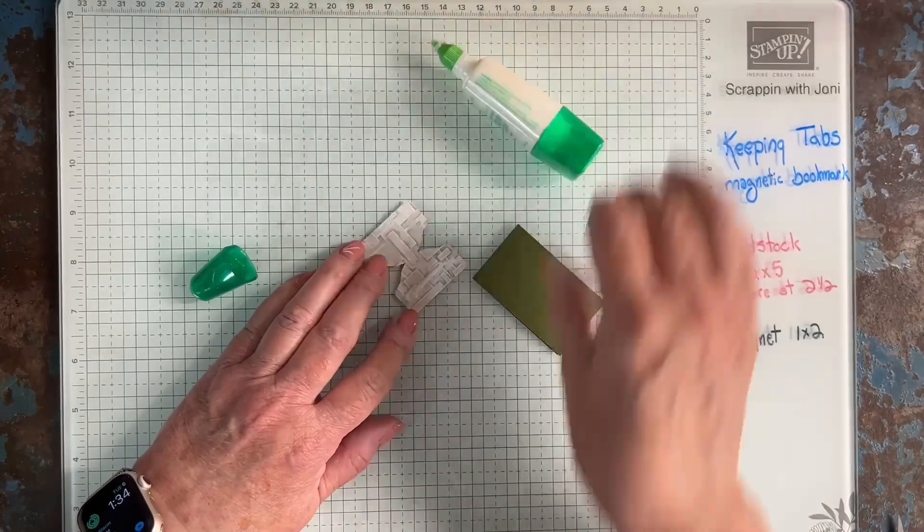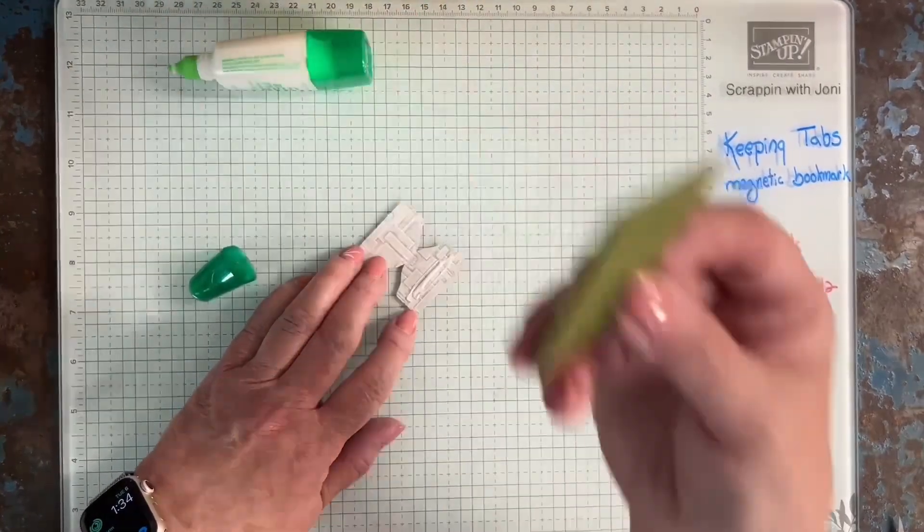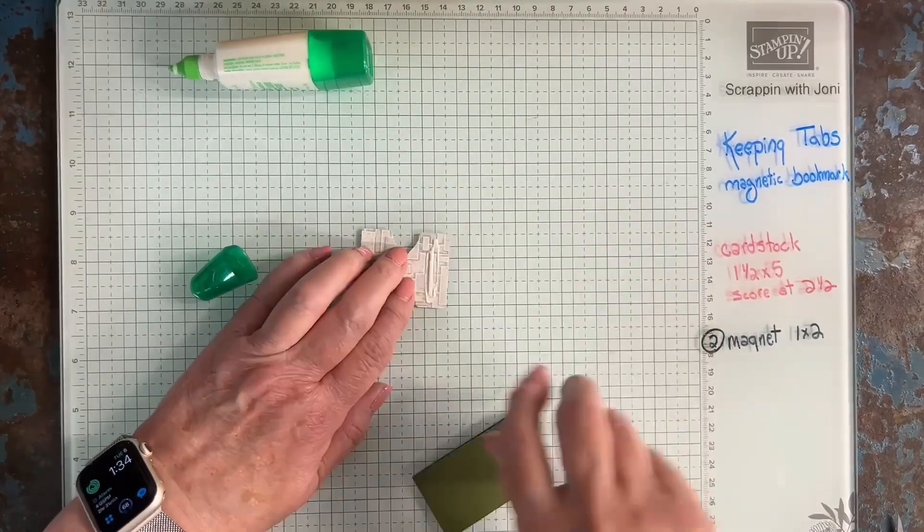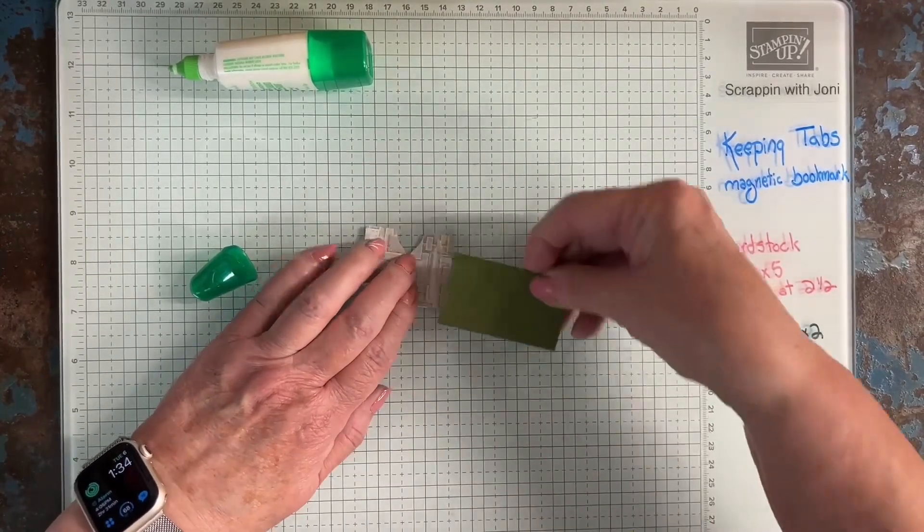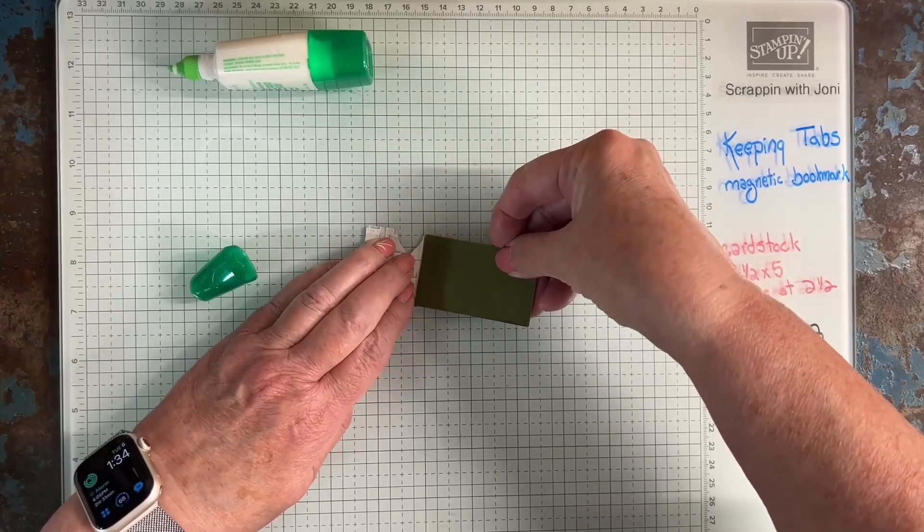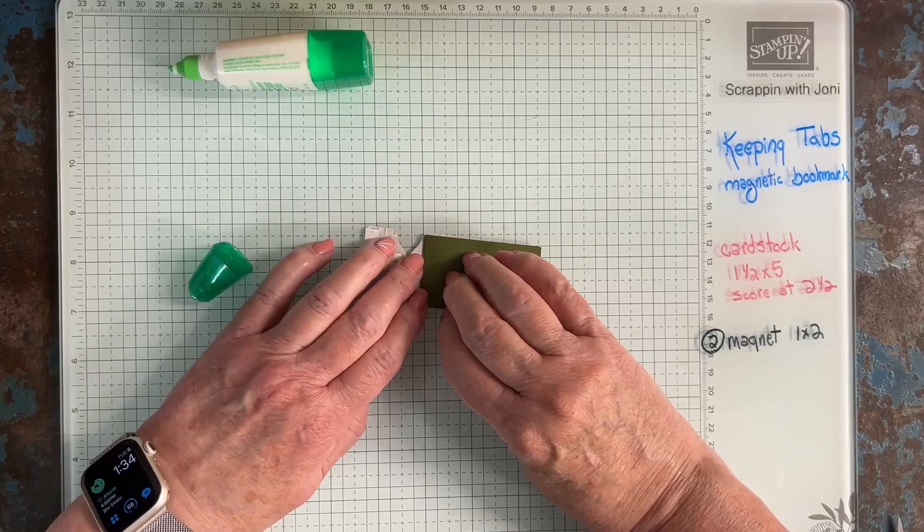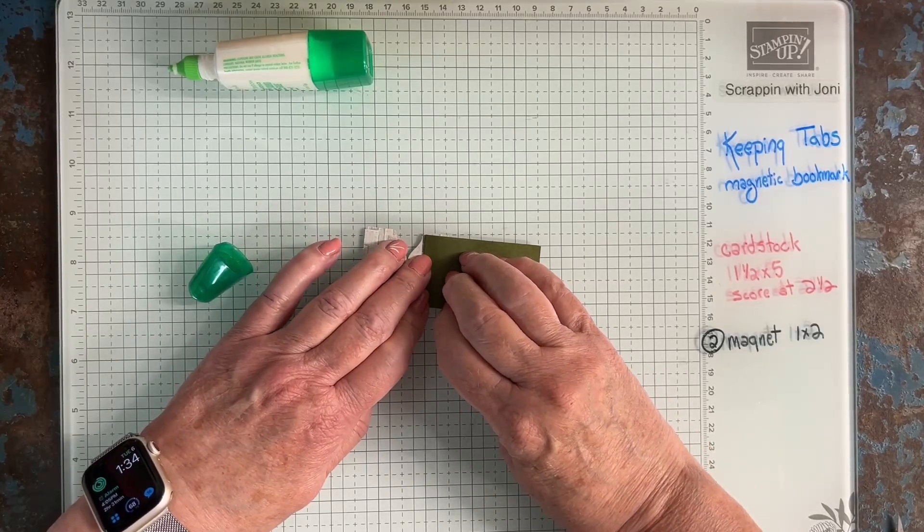That's really all you need. Then I'm going to line this up so that it comes pretty close to the top of that part of the tab. And I think by looking at this, I just did what I told you not to do. I think I put too much glue on it. We're going to give that a second to set.